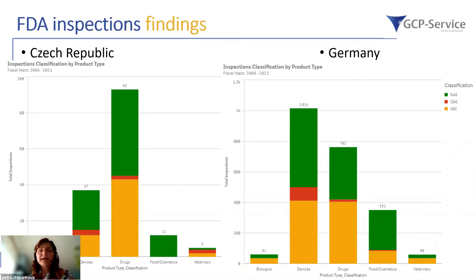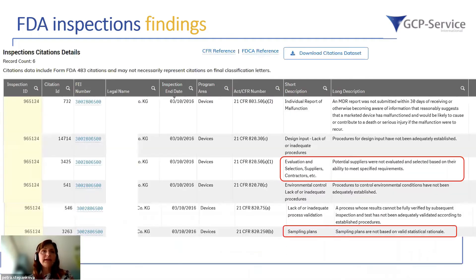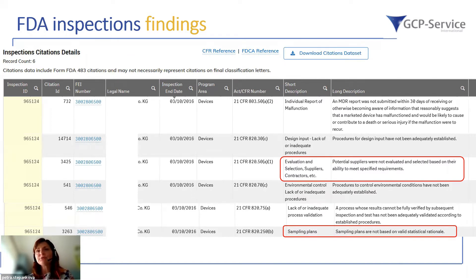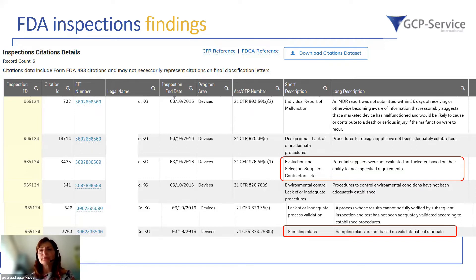Another filter type allows filtering data based on product type. The inspection citation details from the report can also be filtered based on company name — for example, a manufacturer regarding devices — showing what kind of comments were addressed to the medical device manufacturer, and whether they were also related to clinical trials, which can be a good source to learn and avoid such findings in future.